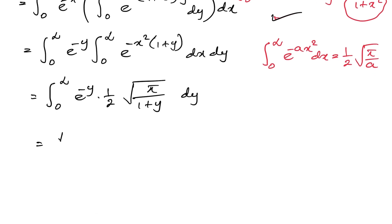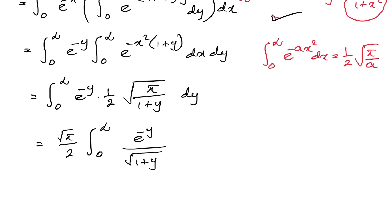We can simplify by taking the square root of pi over 2 as a constant factor outside the integral sign. This leaves the integral from 0 to infinity of e to the minus y over the square root of (1 plus y) dy. Now I am going to use the substitution: let 1 plus y equal t.